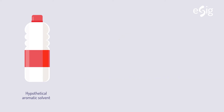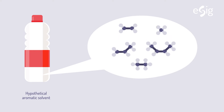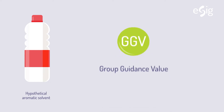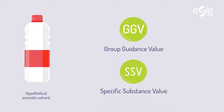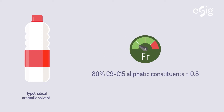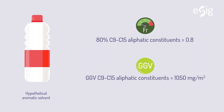First, we need to know the approximate composition of this hydrocarbon solvent so that we match each constituent or range of constituents to a GGV or SSV. If the solvent has 80% C9 to C15 aliphatic constituents, this fraction is expressed as 0.8. Secondly, the GGV of C9 to C15 aliphatics, which equals 1050 mg per cubic meter, is assigned to this fraction.